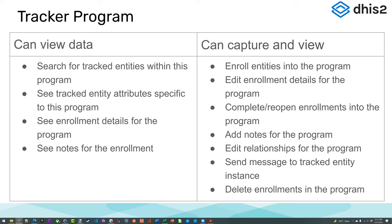If a user just has can view data at the program level, this means they can search for tracked entities within this program — they need access to both the tracked entity type and the program. They can also see the tracked entity attributes specific for this program, see the enrollment details, and see the notes for the enrollment. If they can capture and view, they can do more: they can enroll entities into the program, edit enrollment details, complete or reopen enrollments, add notes, edit relationships, send messages, and delete enrollments.